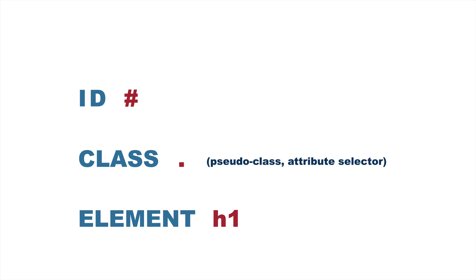Now let's look at a couple more details about specificity. In this hierarchy of ID, class, and element, when we're talking about classes, we're also including pseudo-classes as well as attribute selectors — they get an equal weighting to a regular class. And similarly for the element selector type, any pseudo-elements are going to get an equal weighting to the element selector type.